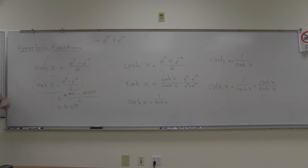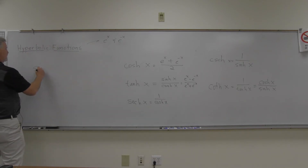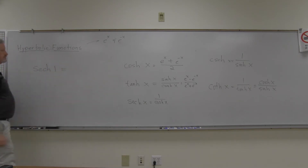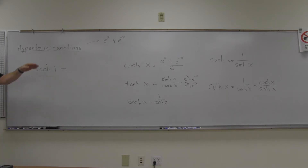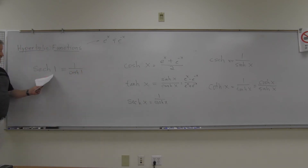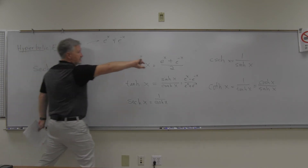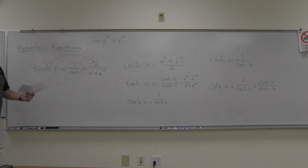For example, to find sech(1): sech is the reciprocal of cosh, so sech(1) = 1/cosh(1) = 2 / (e¹ + e⁻¹). You simply flip over the cosh definition to get the sech value.